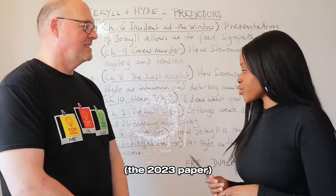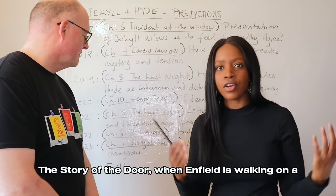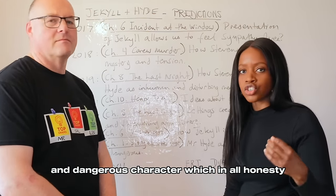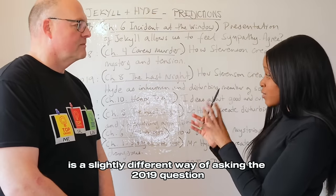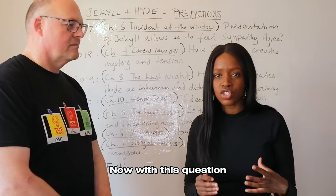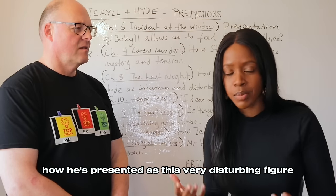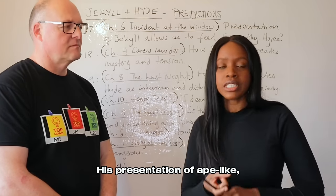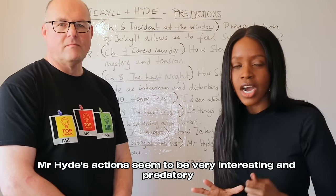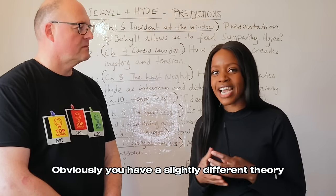Last year's exam — the 2023 paper — presented students with an extract from chapter one, the story of the door, when Enfield is walking on a dark morning at three o'clock. The question asks how Mr. Hyde is presented as a threatening and dangerous character, which is a slightly different way of asking the 2019 question about Hyde as inhuman and disturbing. For any Hyde question you think about how he's presented as a very disturbing figure, using him to play up to Victorian fears. His ape-like presentation references the theory of evolution — the idea that we have an animalistic side to us.